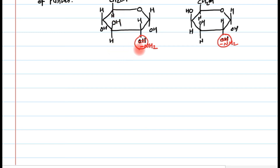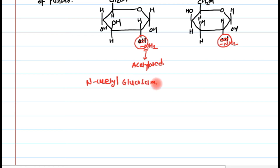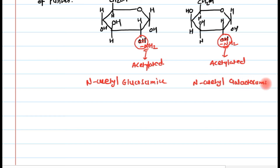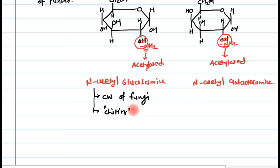In biology, glucosamine does not occur as such. Instead, its amino group nitrogen is acetylated, forming N-acetyl glucosamine. Similarly, in galactosamine the nitrogen becomes acetylated to form N-acetyl galactosamine. N-acetyl glucosamine is found in the cell wall of fungi and in chitins — the substances present in the shells of crabs or lobsters. Because of its presence in chitins, the other name of glucosamine is chitosamine.